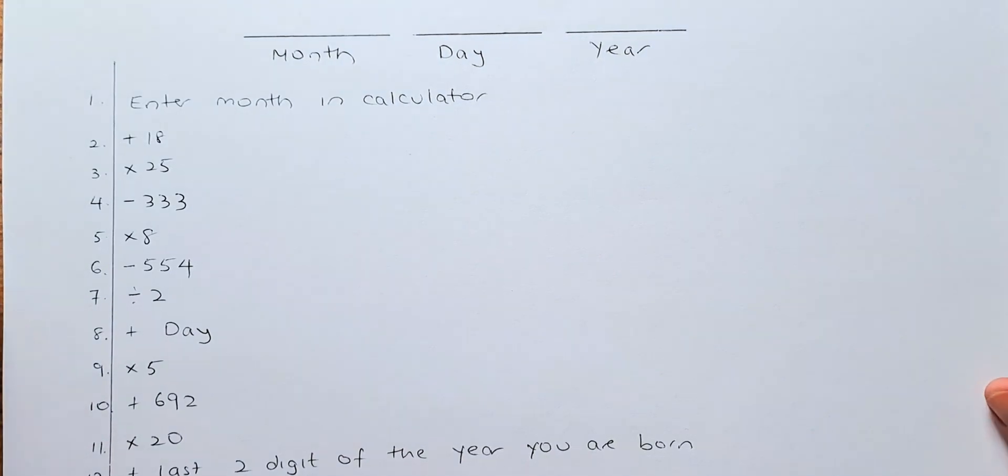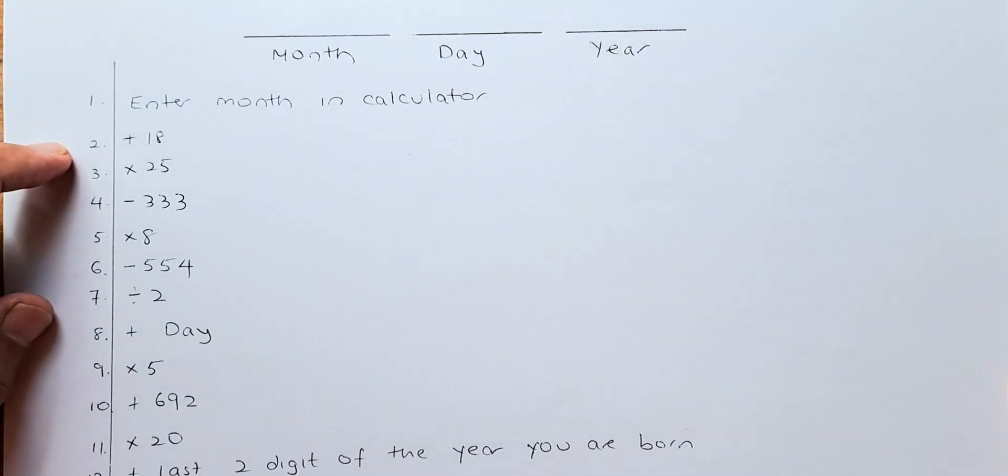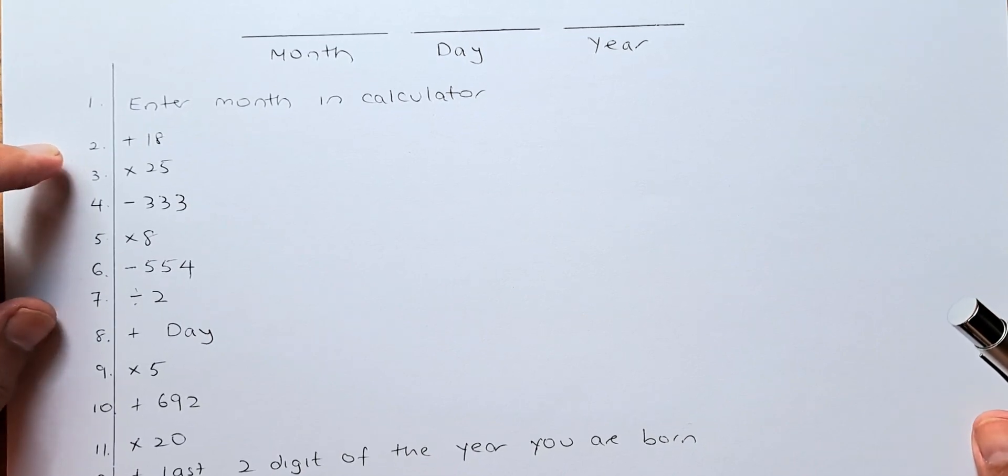Next step, you are going to add 18. And remember, every step put the equal sign. Followed by multiply by 25.